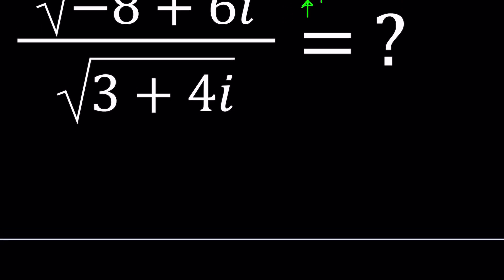First of all, I thought about this problem in a different way, such as if the square root of 3 plus 4i equals a plus bi, then what is the square root of negative 8 plus 6i in terms of a and b?